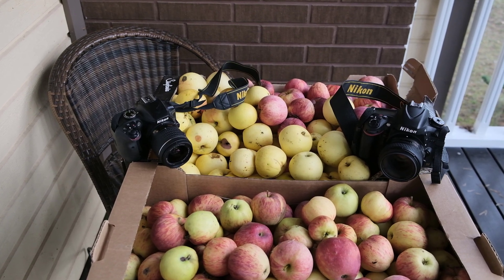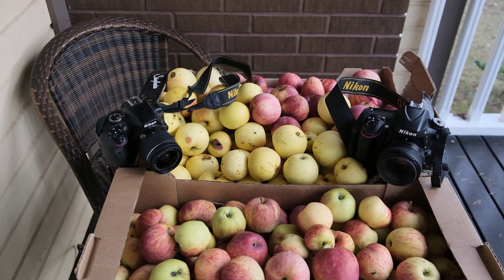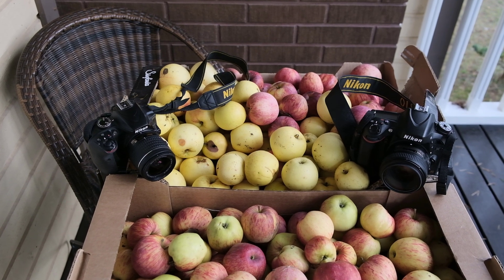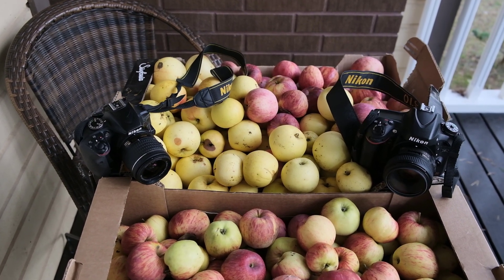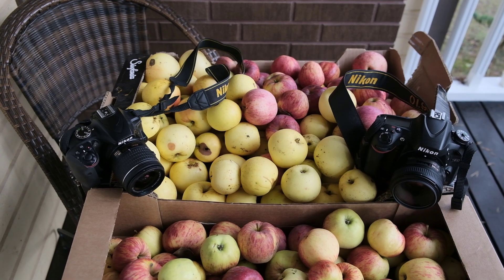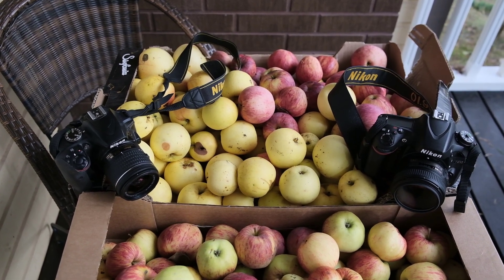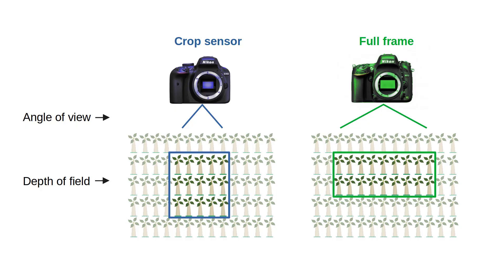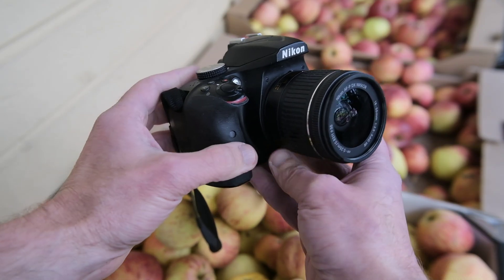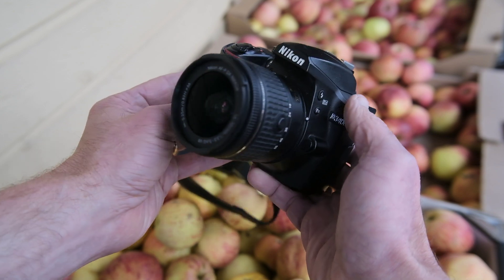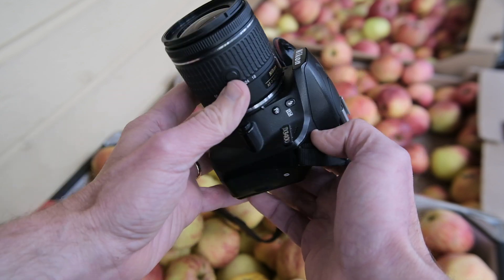Dear viewers of the Tomphoto channel. When switching between cameras with different sensor sizes, like the full-frame Nikon D610 and the crop sensor Nikon D3400, you notice that the same lens behaves differently on each camera. This is because the size of the sensor affects both the angle of view, which is how much of the scene you capture, and the depth of field, which is how much of the image is in focus. In this video, I'll walk you through how to match both the angle of view and depth of field between two different cameras.